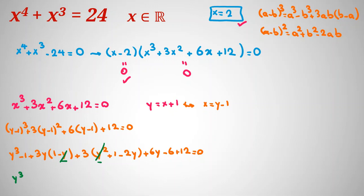Now let's simplify. The y squared terms are negative 3y squared plus 3y squared — they cancel. This is why the change of variable is useful: we have no y squared term. For the y terms: 6y here, and negative 3 times 2 gives negative 6y — these two also cancel. The constant term is negative 6 plus 12 plus 3 times 1 equals 3, and combining: 3y plus 3y gives 6y... simplifying the constants: 3 plus 6 equals 9, minus 1 equals 8.